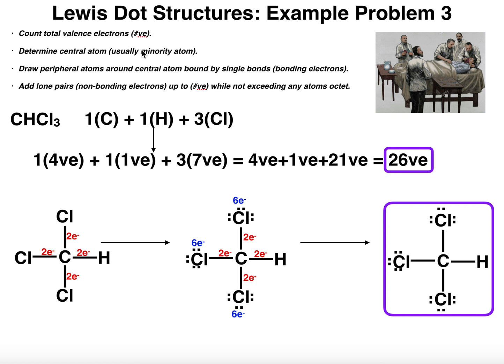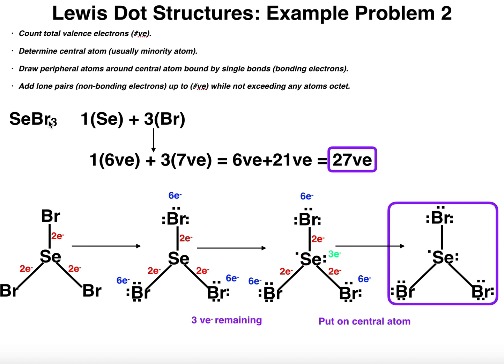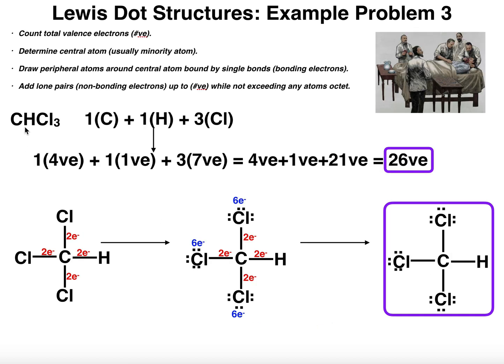Next we need to determine the central atom. In the previous two videos that was pretty easy because the central atom is just the minority atom generally. In BF3, there's only one boron and three fluorines, so boron was the central atom. In the next example we have three bromines and one selenium, so selenium's the central atom. Here we have two atoms where there's only one of them. We have a carbon and a hydrogen. Which one's the central atom?